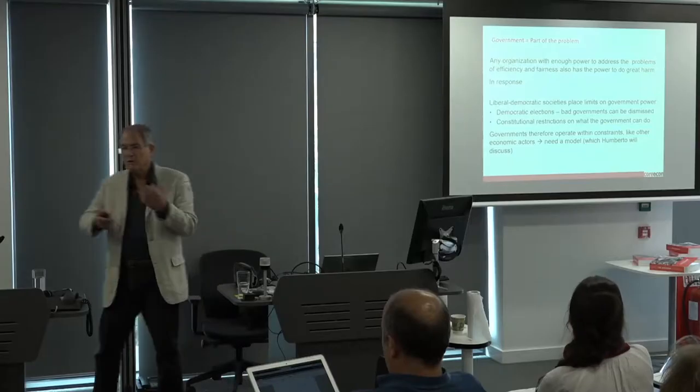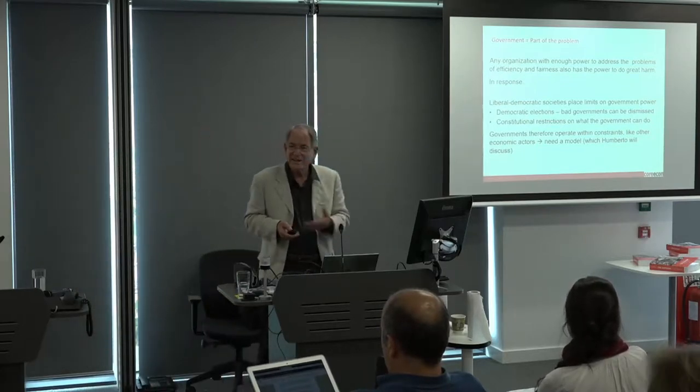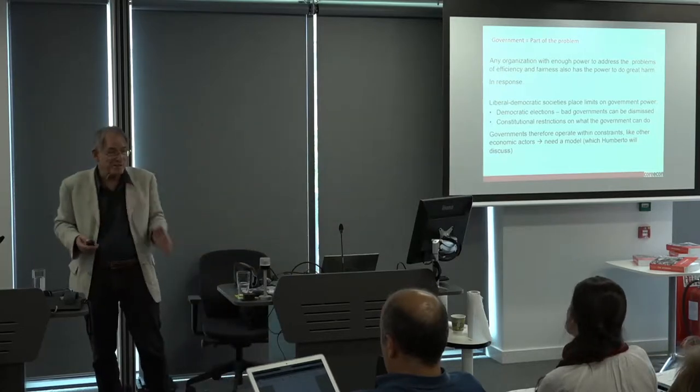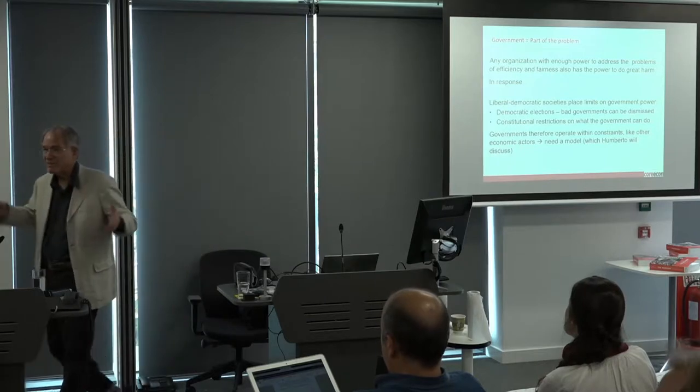We have a model then of a government operating under constraints. And guess what that's like? It's just like the slides that Wendy showed you before — there's going to be a feasible set and indifference curves, and students have now seen this seven or eight or nine times. Humberto's going to lay out what that model looks like. Having laid out this problem — the government as a rent-seeking problem — we then want to say how various societies have dealt with this.